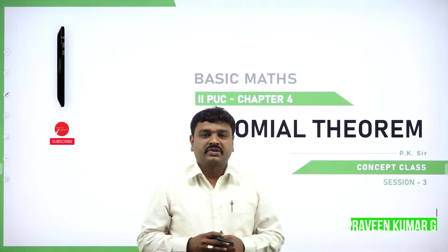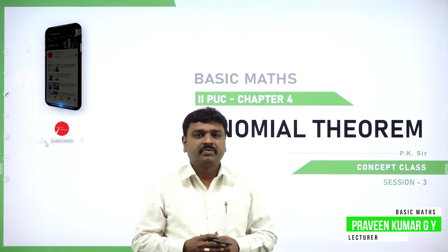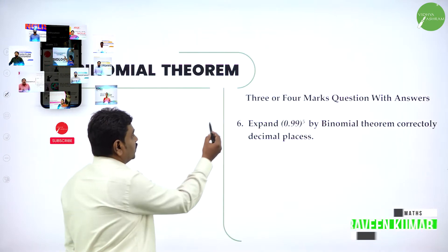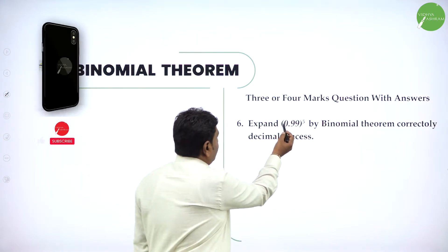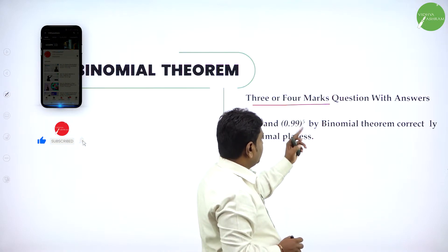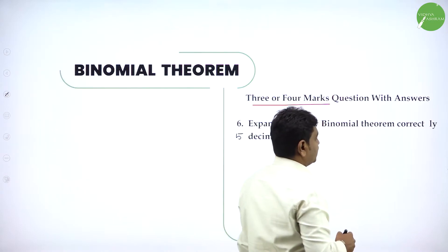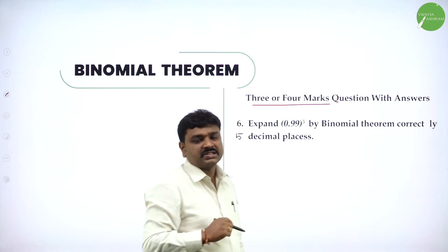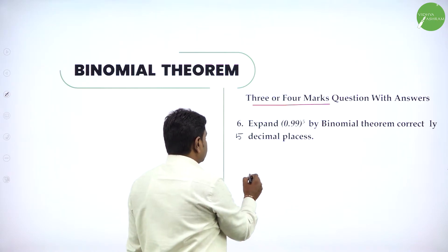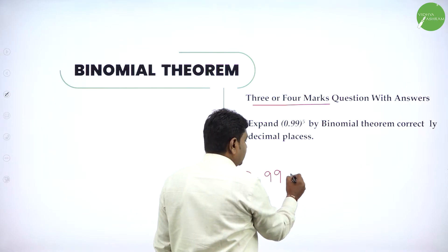Welcome to the session, dear students. Today I will go ahead with problems of binomial theorem. So now 3 and 4 mark questions. We will expand 0.99 power 5 by binomial theorem correctly till 5 decimals.